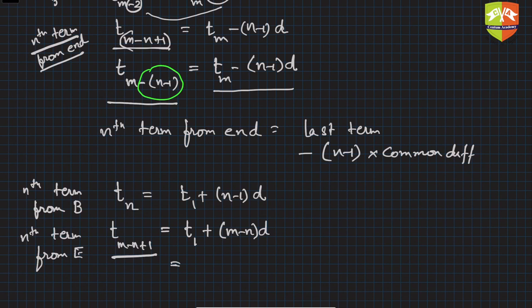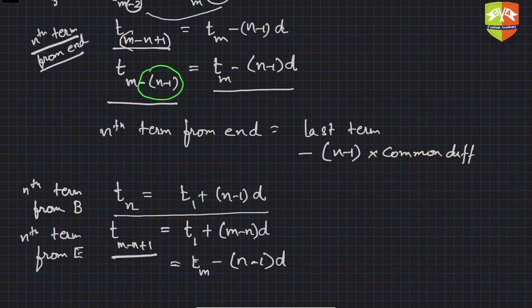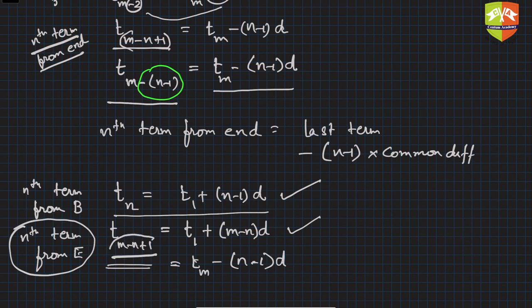If you want to express it from the last term, it is t_m minus (n-1)d. So t_n is the nth term from the beginning, and the nth term from end is t_(m-n+1). The moment I write t with a subscript, it always refers to the term from the beginning. The nth term from end has two expressions: one in terms of the first term, and one in terms of the last term.